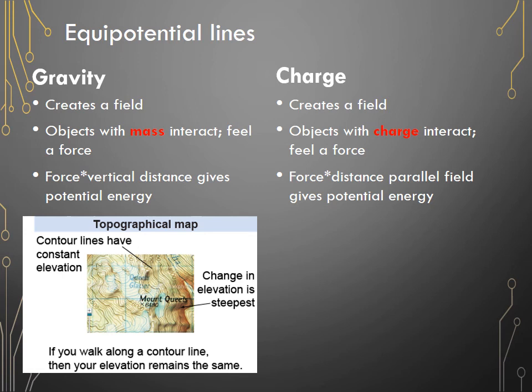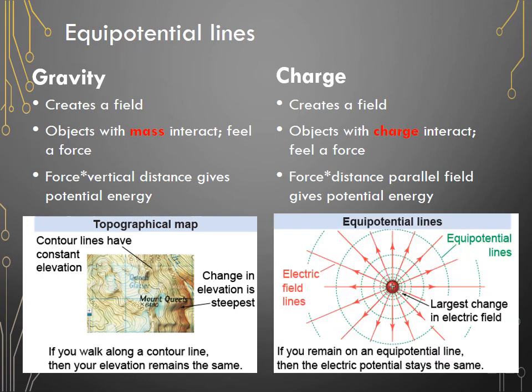Remember, we talked about a topographical map, where a contour line has the same elevation the whole way, and so if you walked along a contour line, you would never change your gravitational potential energy. Similar things created around a point charge, but even if you had a funky-shaped field, if you had several point charges interacting, you could still draw equipotential lines, where if you stay on an equipotential line, then your electric potential energy stays the same.